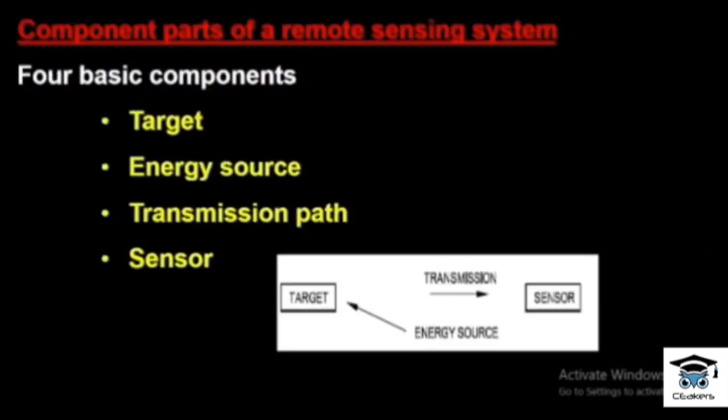The various components of a remote sensing system are very important to learn. There are four basic components of remote sensing: the target, the energy source, the transmission path, and the sensor. If you don't understand what the energy source is on the target, it will transmit information to the sensor.